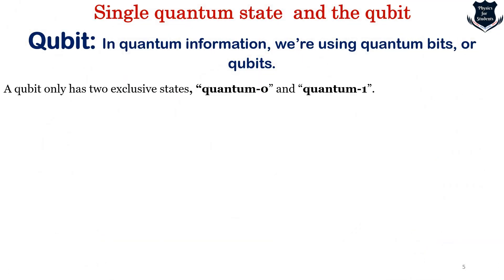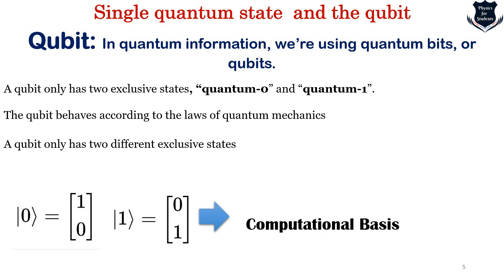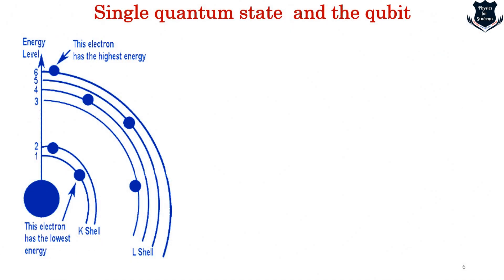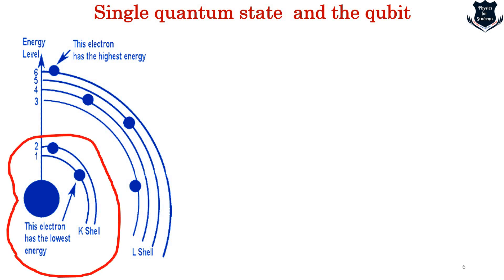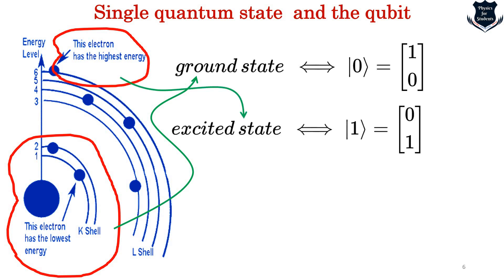We also got the qubit, which is basically quantum bits. It can exist exclusively in quantum 0 or quantum 1 state. Qubits behave according to the laws of quantum mechanics and have two different exclusive states — quantum 0 and quantum 1. The energy levels show that the lowest electron level is denoted by the ground state |0⟩, and the highest electron level is the excited state |1⟩.